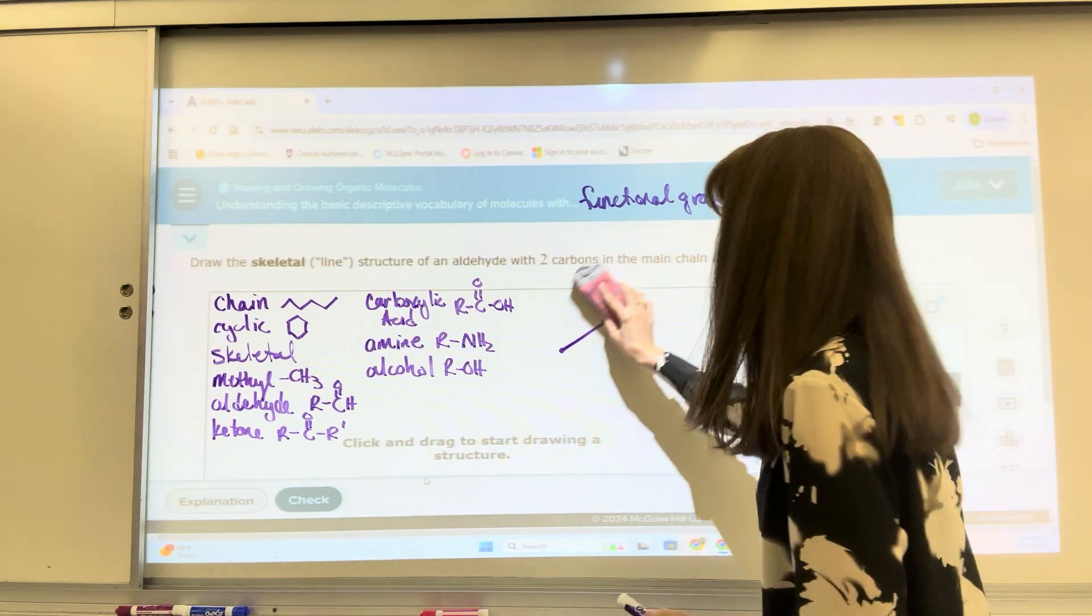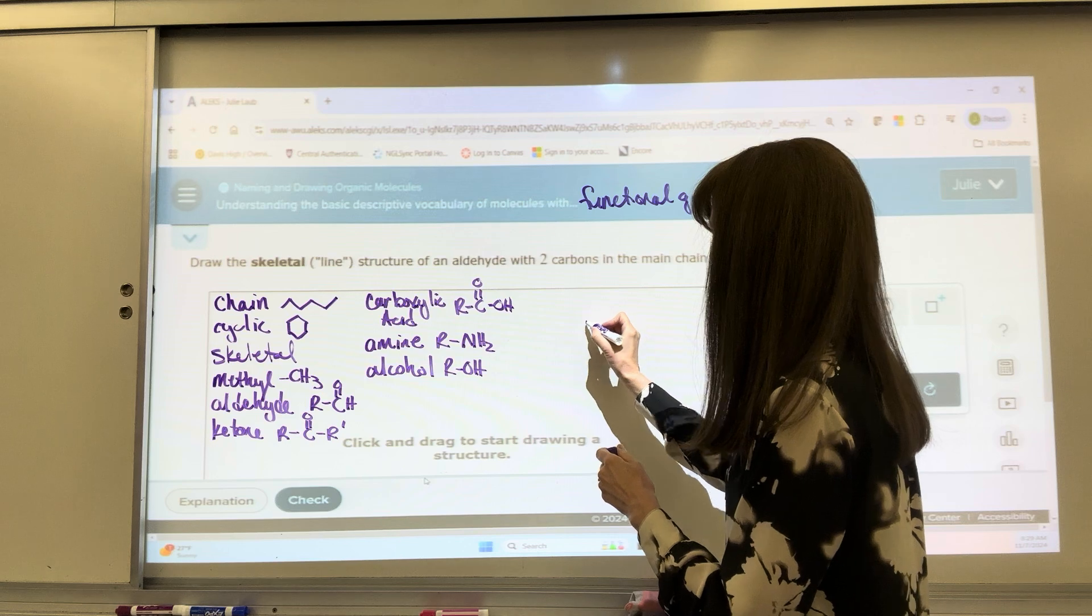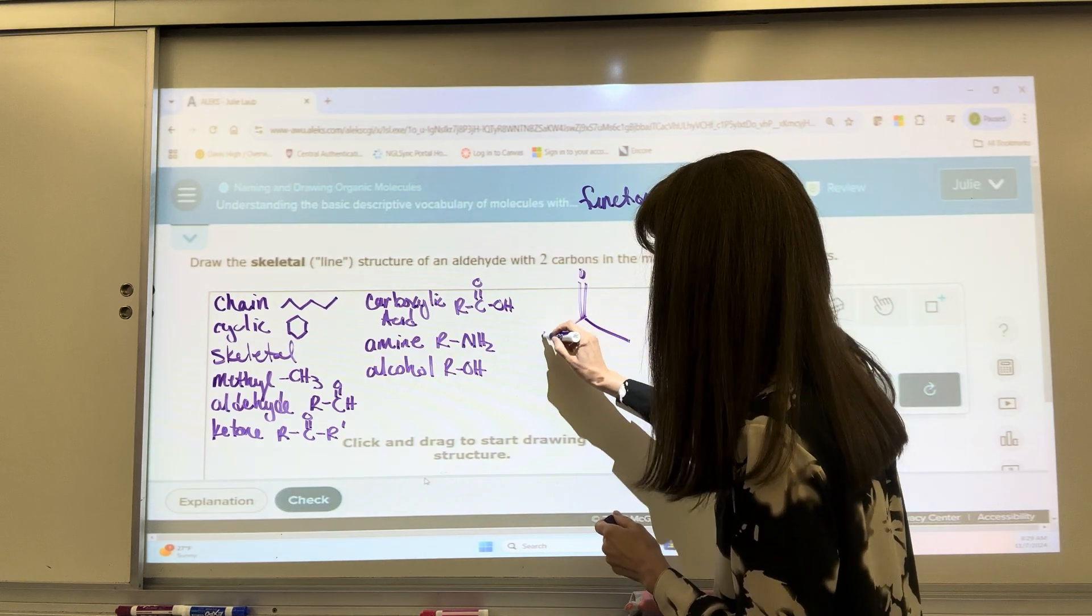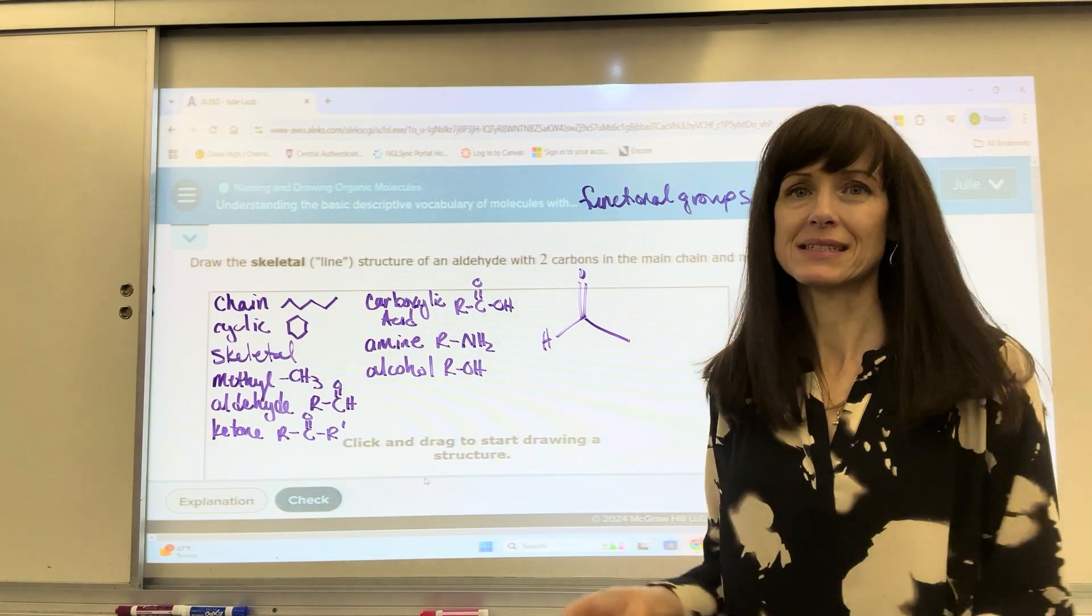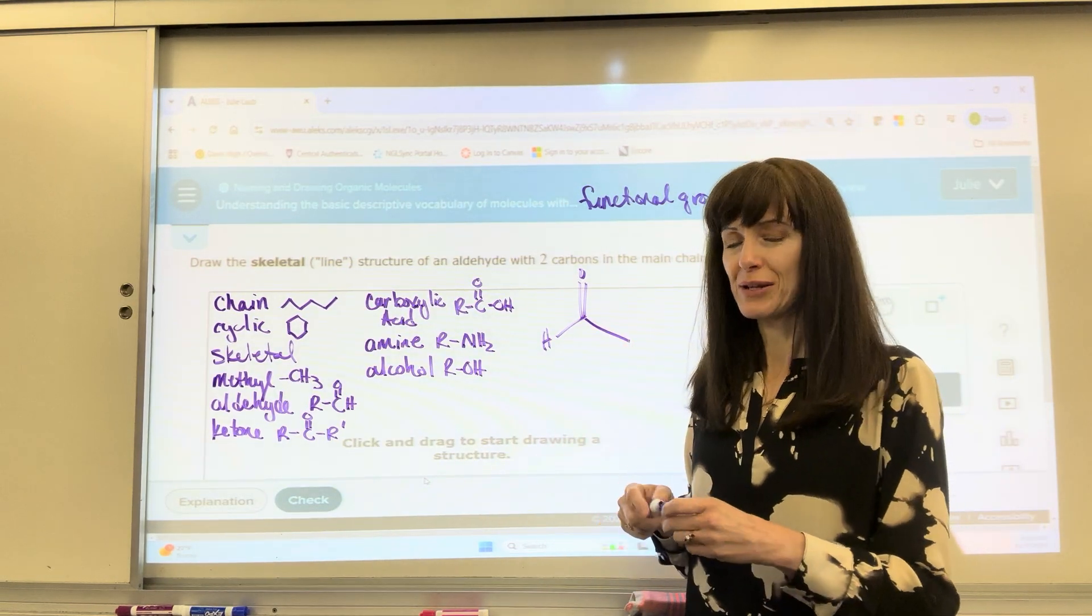Now I could have done this, I could have done it where I went down like that, and I did my double bonded oxygen here and a hydrogen there. That's fine. It's the last carbon. As long as you're at the end of a chain, you're going to be great.